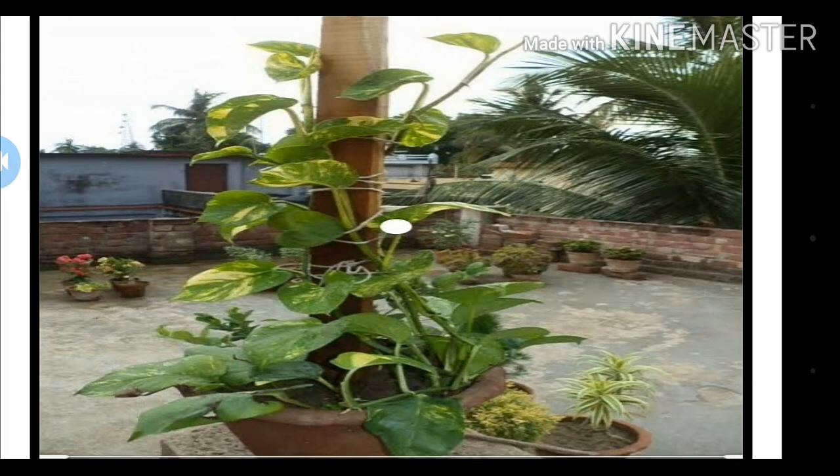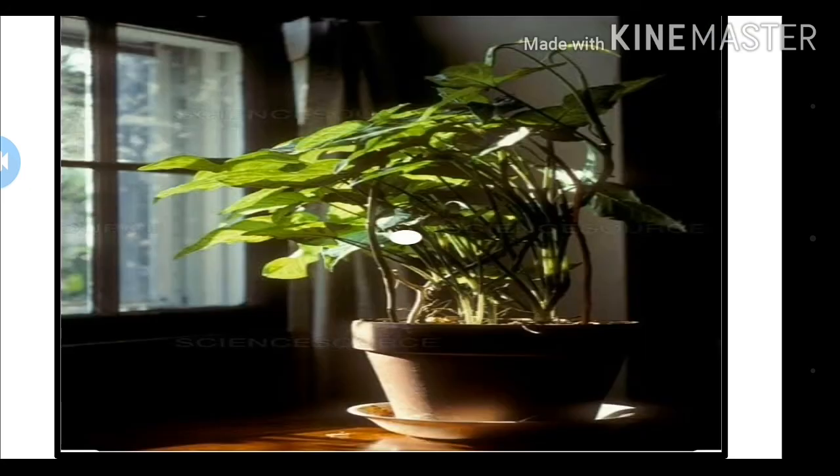Another example: a creeper planted in the courtyard leans towards a support. In this picture, we can see that a money plant is leaning towards a support, which is the stick. Also, a potted plant placed in a window grows towards sunlight. This is also an example of responsiveness to stimuli.